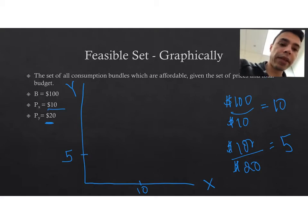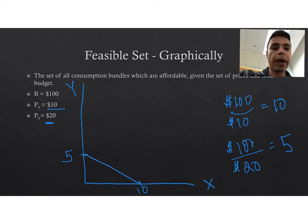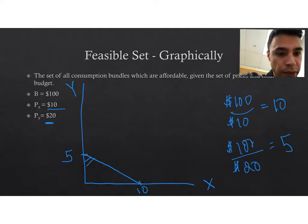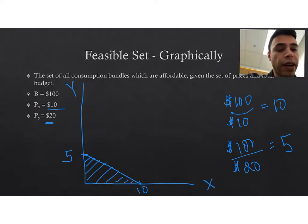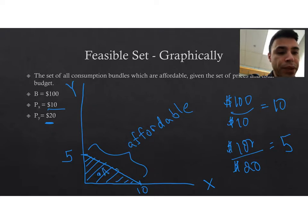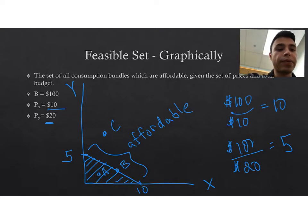Thus the feasible set is the triangle bounded on the bottom by the horizontal axis, bounded on the side by the vertical axis, and bounded in between them by the line connecting the two intercepts. Everything within this triangle is part of the feasible set. Everything on the line is affordable, everything within the triangle is affordable. For example, point A is affordable, point B is affordable, but point C is unaffordable — it's not part of the feasible set.